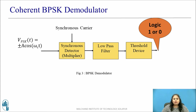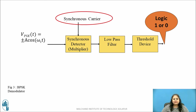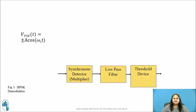Let us now see how a BPSK signal is demodulated. The figure shows the block diagram of coherent BPSK demodulation. It simply consists of a synchronous detector, that is a multiplier, a low pass filter, and a threshold device. The incoming BPSK signal, equal to ±A cos(ωc·t), is applied to one input of the synchronous detector. To the other input, a synchronous local carrier is applied, which is either generated at the receiver or extracted from the incoming BPSK signal. The demodulated information bit stream is obtained at the output of the threshold device.